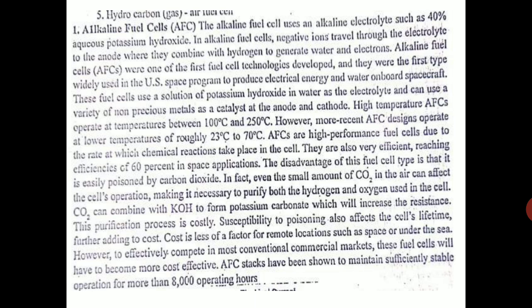The problem is that alkaline fuel cells can be poisoned by CO₂. CO₂ in the air can affect cell operation, and hence we need to use pure hydrogen and pure oxygen in this fuel cell. The CO₂ can combine with the electrolyte potassium hydroxide to form potassium carbonate, which increases resistance. So CO₂ must be excluded.